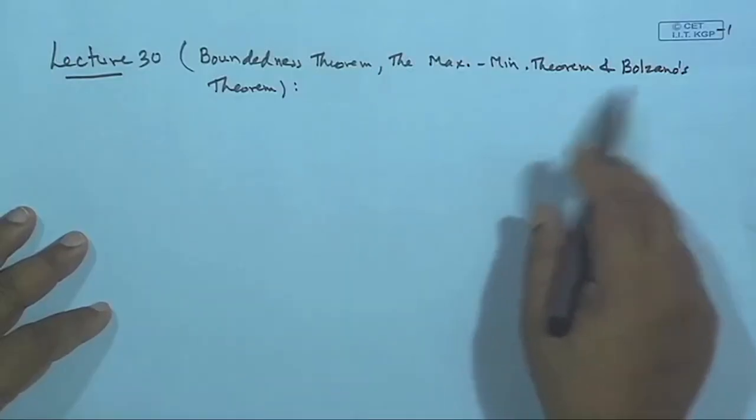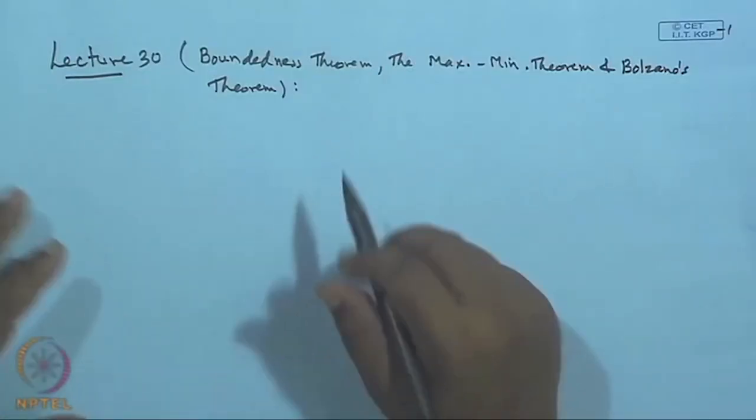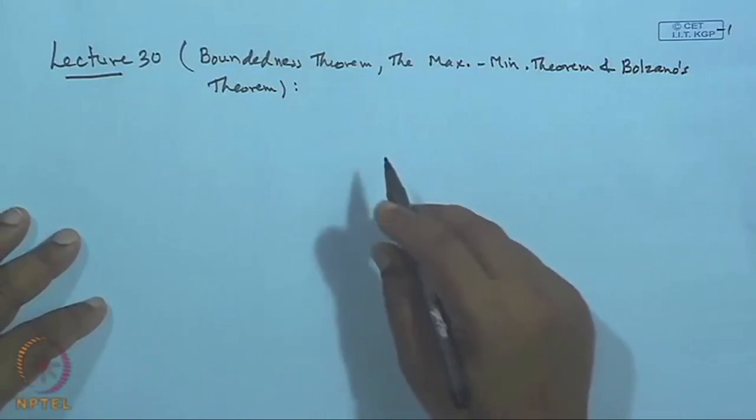This is a continuation of our previous lecture. We wanted to discuss the various properties of continuous functions. As a consequence, we see that if a function is continuous over a closed bounded interval, then we have results known as the Boundedness Theorem, Maximum-Minimum Theorem, and Bolzano's Theorem. This also gives a criterion to find an approximate solution for the root of a function — that is, root location.